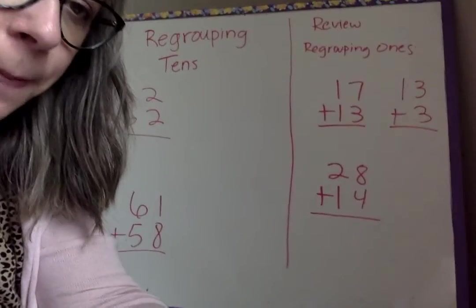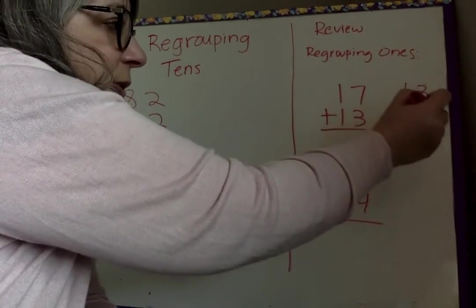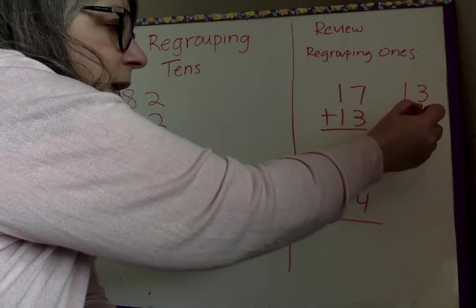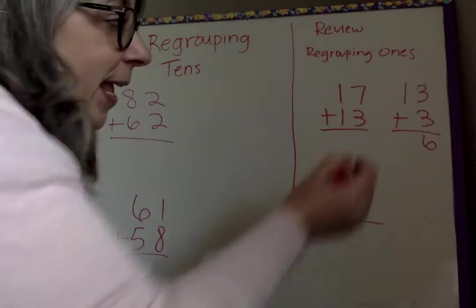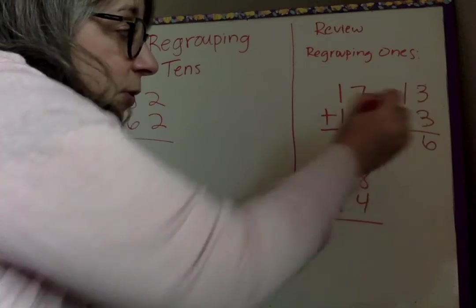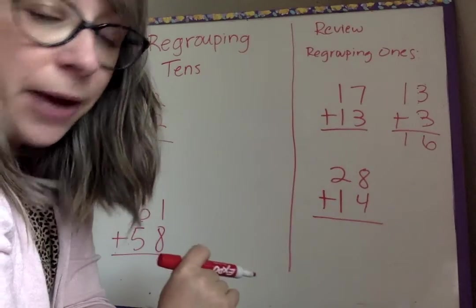So 3 plus 3. Oh, I can't see that. Sorry. So 3 plus 3, 3, 4. Oh, sorry. 1, 2, 3, 4, 5, 6. I'm rushing here. And then 1 plus nothing is 1. And so we didn't regroup with that one.